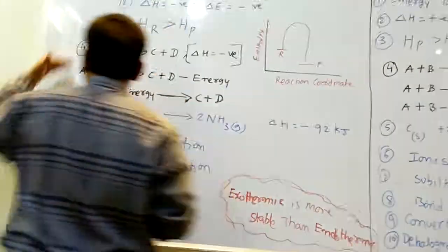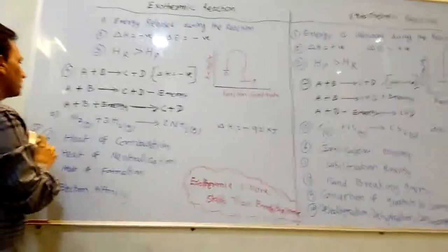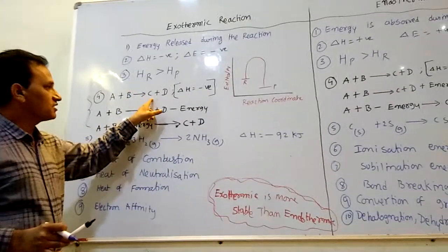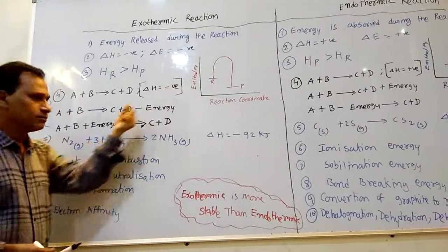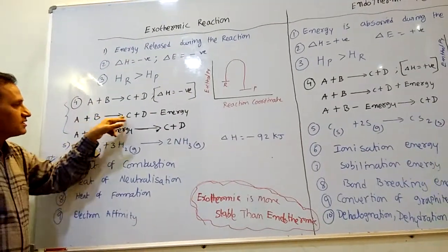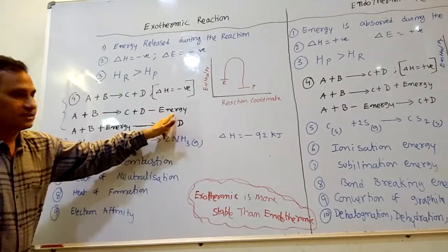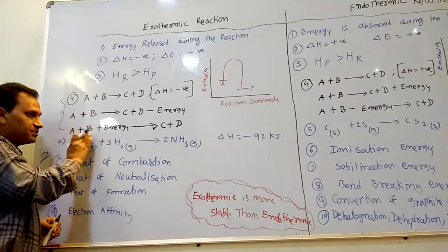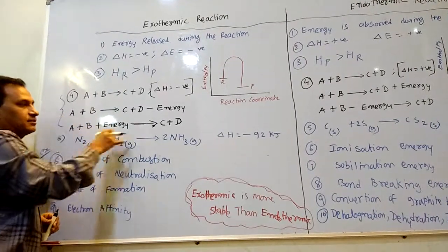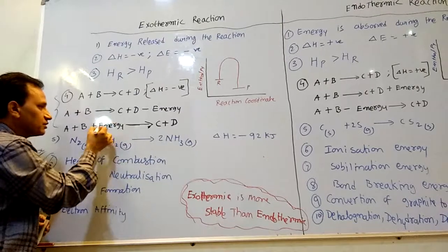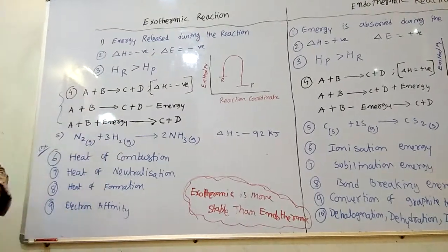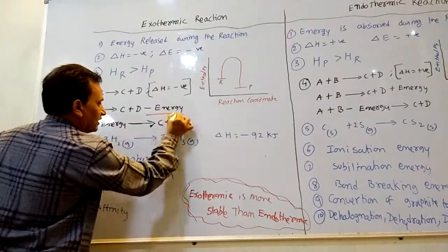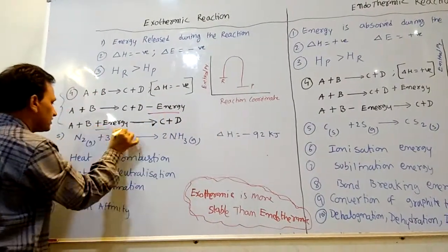This is the representation of exothermic reaction. Exothermic reaction is represented in three forms: A + B → C + D, delta H negative; A + B → C + D minus energy in the product side; and A + B plus energy in the reactant side gives C + D. Minus energy in the product side, or plus energy in the reactant side.